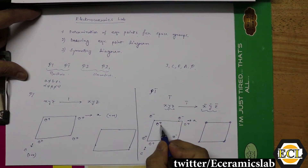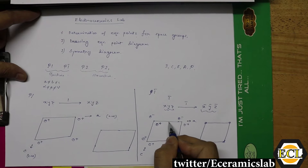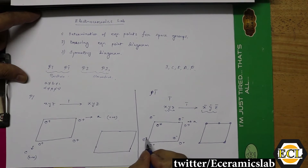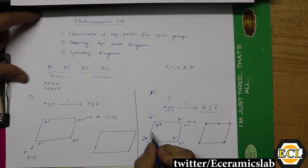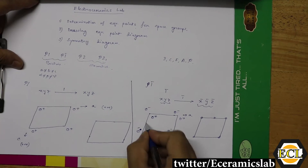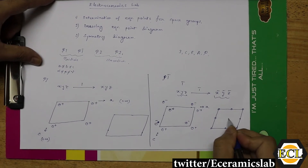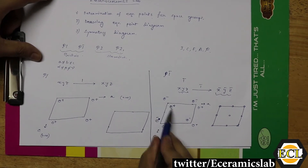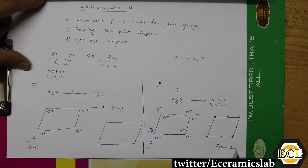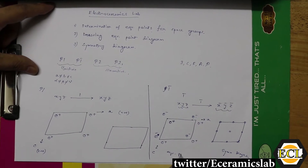Auto-generated inversion centers also appear. The inversion of this object gives this one, so another inversion center is generated automatically here, and similarly additional inversion centers are generated at other positions — here, here, here, and in the middle — because the inversion of this object maps to this one. This is the symmetry diagram of the P1-bar space group.